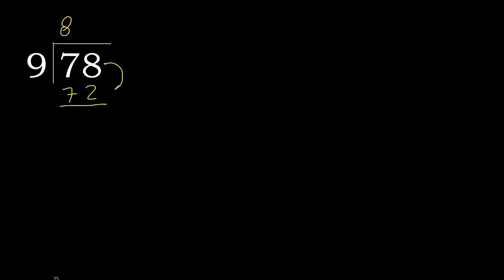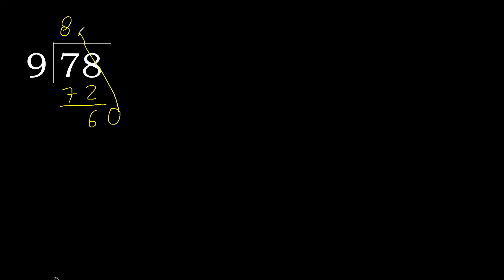78 minus 72 is 6. Next — there is no next number, therefore complete. Always complete with 0. Here with point — complete point.